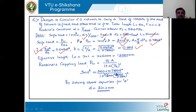Using the crippling load equation PCR equal to sigma c into A divided by 1 plus alpha times (Le by k) whole squared, substituting all values in terms of D and solving, we get the diameter D equal to 321.2 millimeters. You can round off this value. So design here means finding the diameter of the circular column.